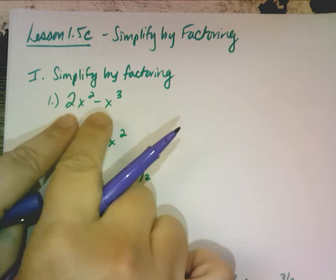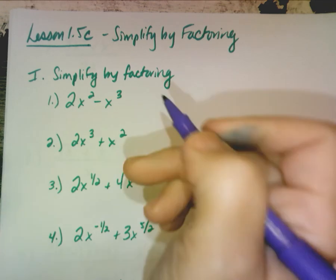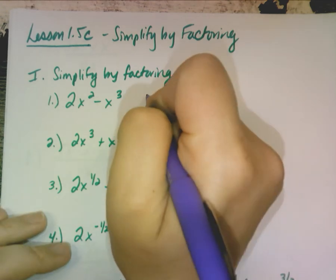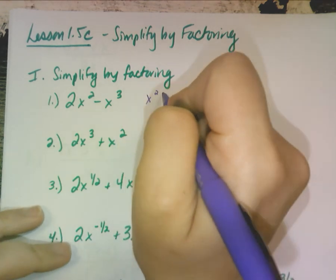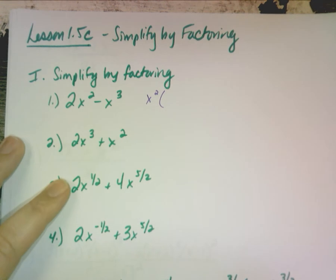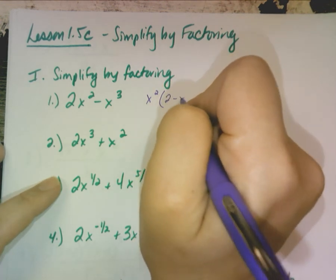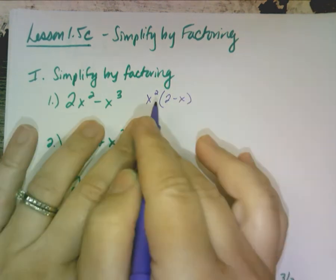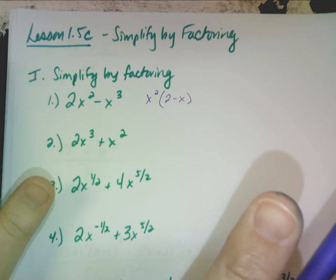If I said factor this for me, what would you factor out? X squared. You're like, come on, lady, this ain't hard. I know. What would you be left with? Three minus x. Beautiful. Can you factor that anymore? No. You're done.